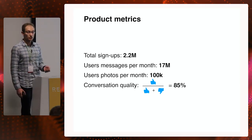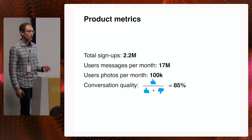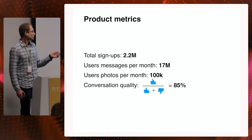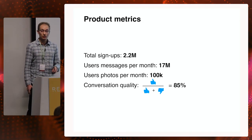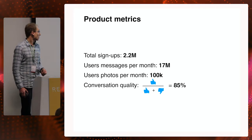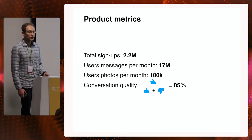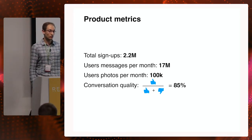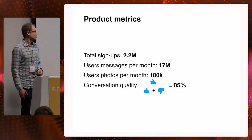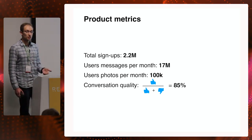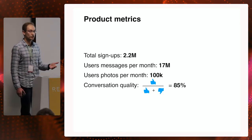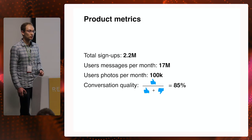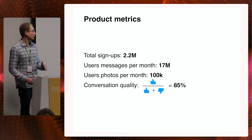Users can send photos and Replica can not only recognize them but also chat about them. Our users send more than 100,000 photos per month of their pets, food, selfies, and other stuff. We also measure conversation quality. Users can either upvote or downvote Replica messages to show if they like a given response or not. One of the key quality metrics is upvote fraction, which is the ratio between total number of upvotes and total number of all reactions.